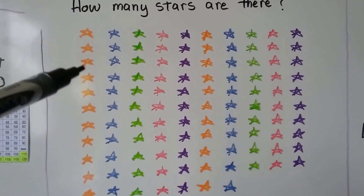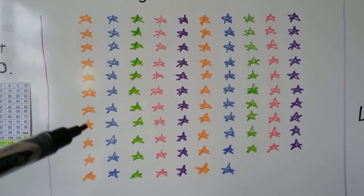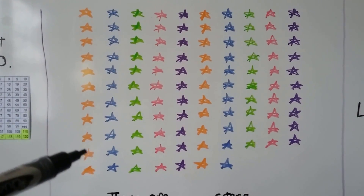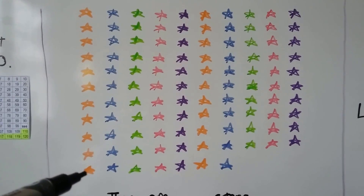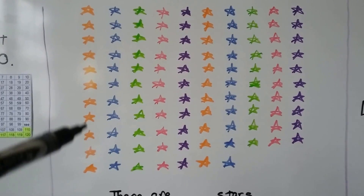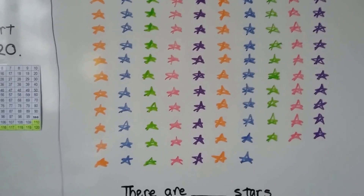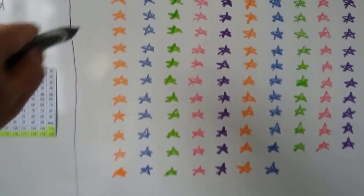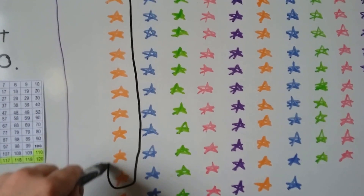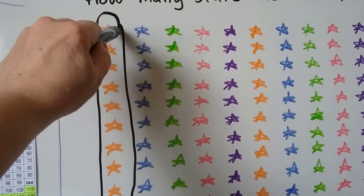We count: 1, 2, 3, 4, 5, 6, 7, 8, 9, 10, 11. So we need to stop here. We can circle the orange stars, but we have to stop at this one. So that's 110.